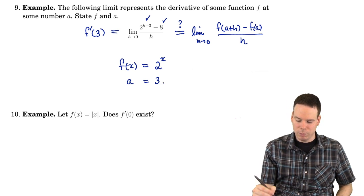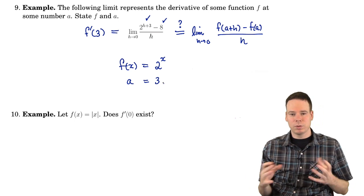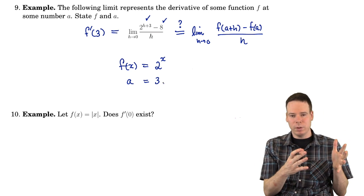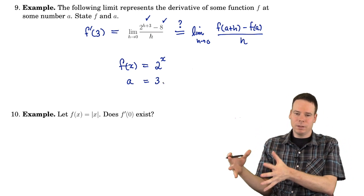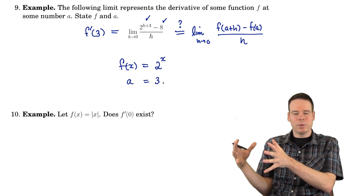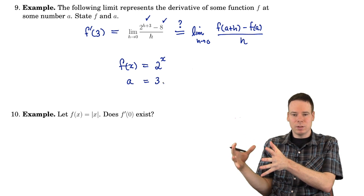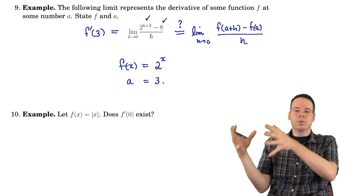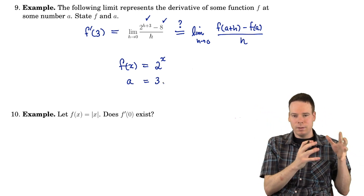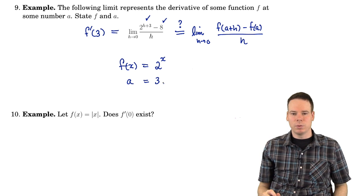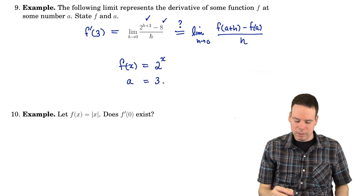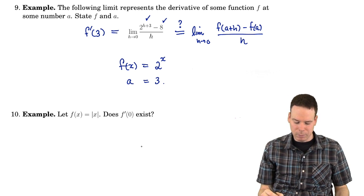It's going to be important for us to be able to go back and forth: starting with a function and a point, writing down the limit that represents the derivative; and starting with a limit, determining what function and what point it represents the derivative of.